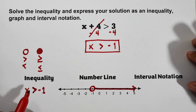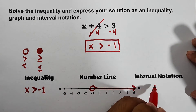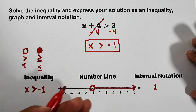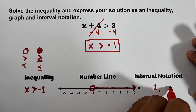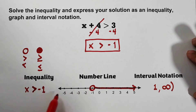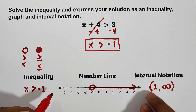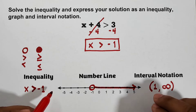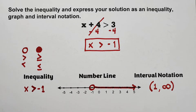For the interval notation: it starts at negative 1, but negative 1 is not included, so we write negative 1 as the left bound. Going to the right the values increase toward infinity, so we use positive infinity as the right bound. Since negative 1 is not included we use a parenthesis there, and we always use a parenthesis with infinity. So the interval notation is (-1, +∞).